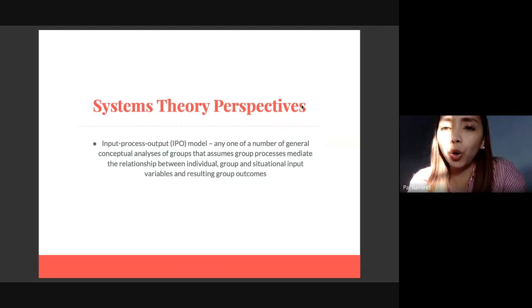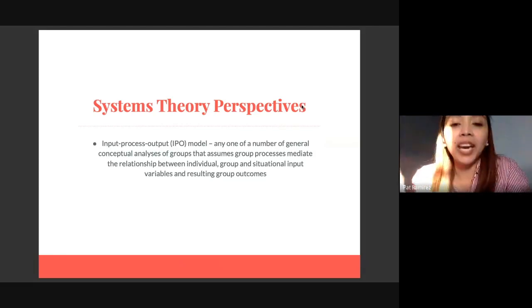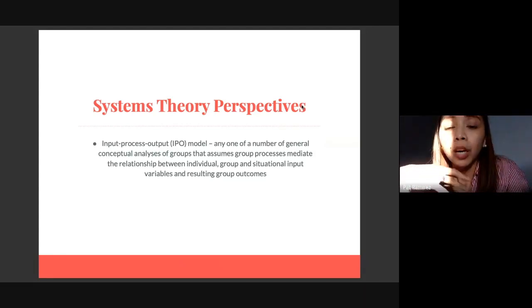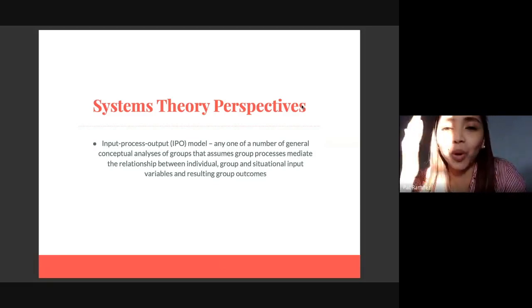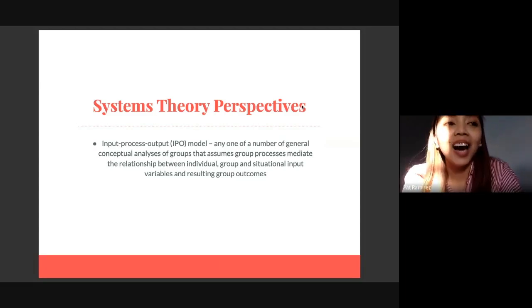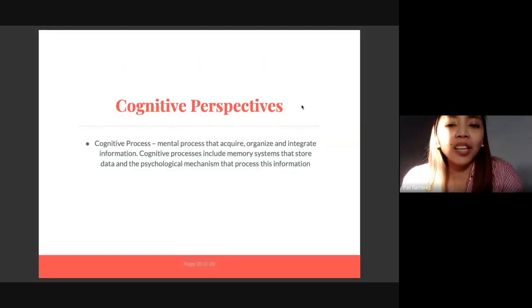Another theory under the systems theory perspective is the IPO model, which states that when you are in a group, you give an input, you negotiate within the group about what you'll discuss, and when you finalize everything - regardless of what you are talking about, regardless of what you're deciding - when you finally have the product, that's your group output. That's the IPO model.